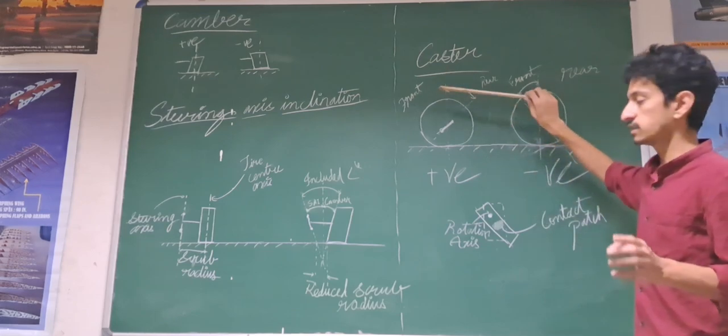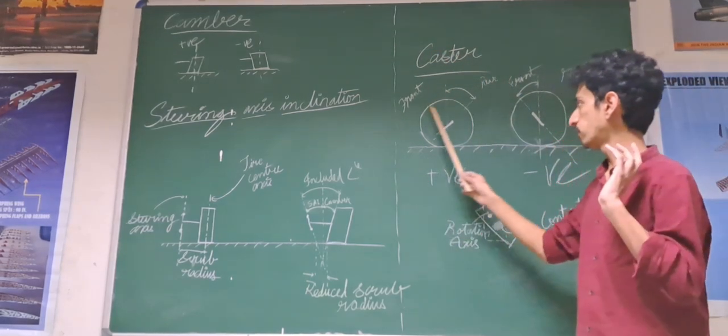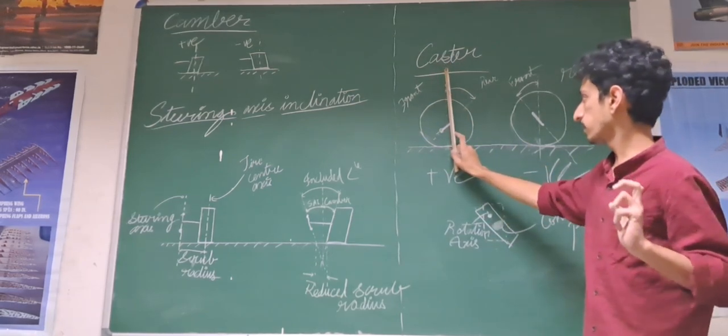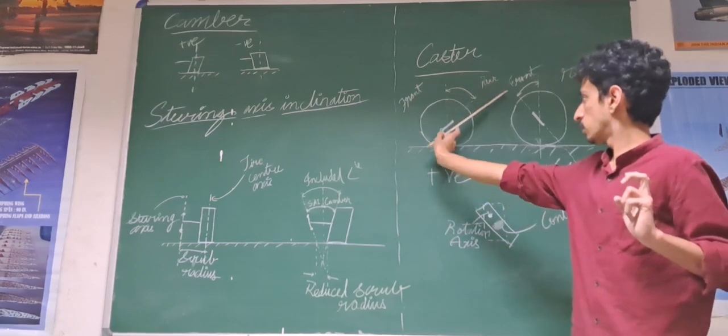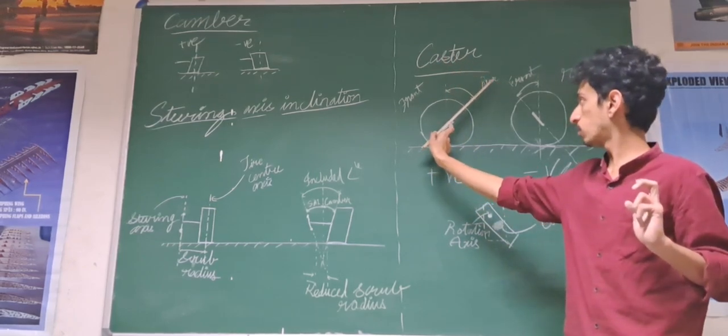Positive caster is when you look at the go-kart from the side view. At the front wheel, with respect to vertical, the steering axis or the kingpin is inclined toward the rear like this. This is known as positive caster.